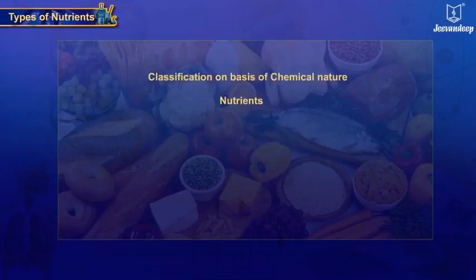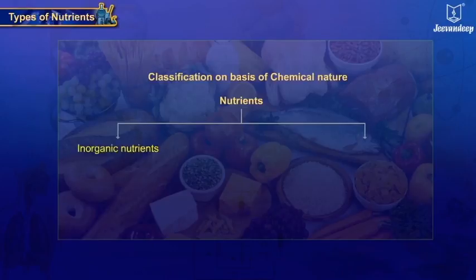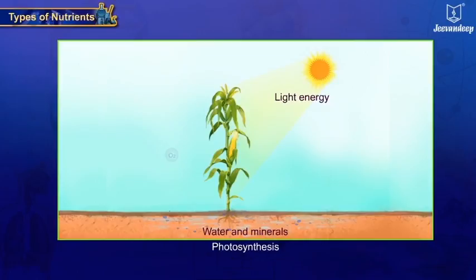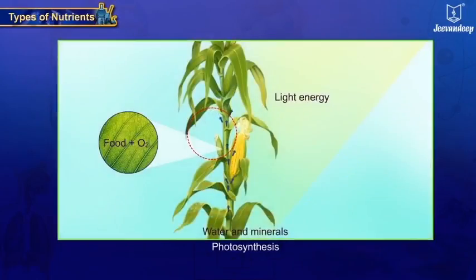On the basis of chemical nature, nutrients are classified into two types. One: inorganic nutrients. Plants obtain inorganic nutrients from the soil and atmosphere through the roots and leaves. These inorganic nutrients are then converted by the plants to organic compounds through the process of photosynthesis. These compounds are used for growth and development of various parts of the plant.